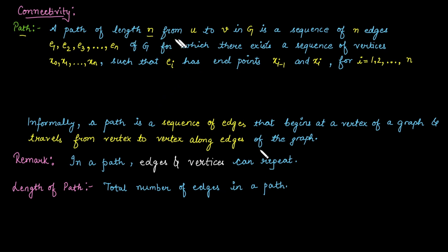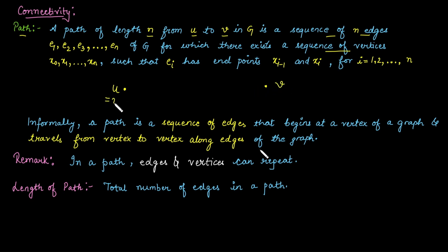A path of length n from vertex u to v is a sequence of n edges for which there exists a sequence of vertices such that the i-th edge has endpoints x_(i-1) and x_i. If we want to travel from vertex u to v, we set u equal to x_naught and v equal to x_n.